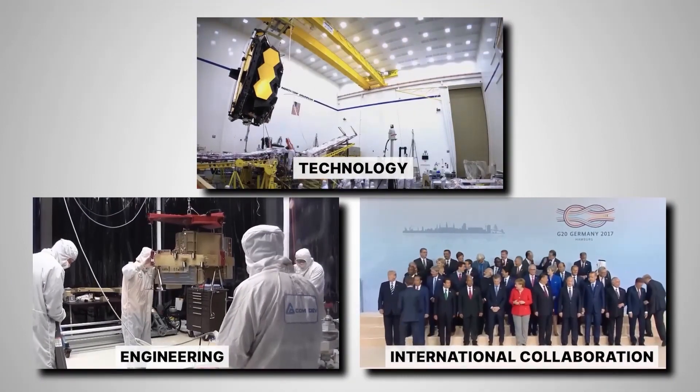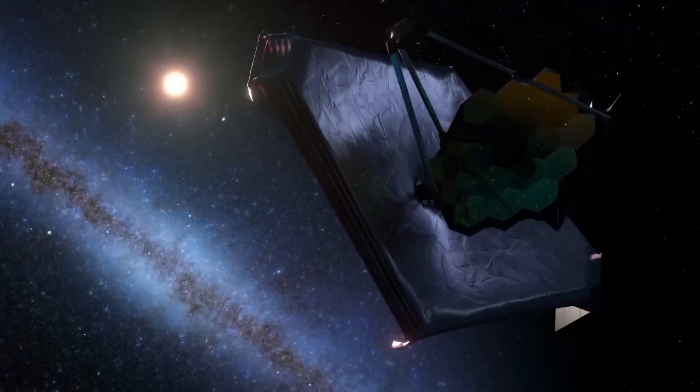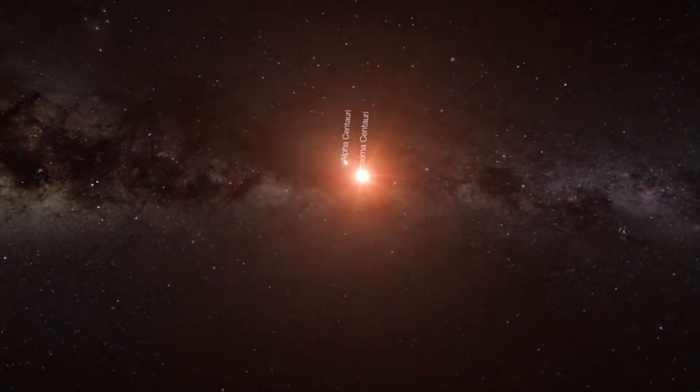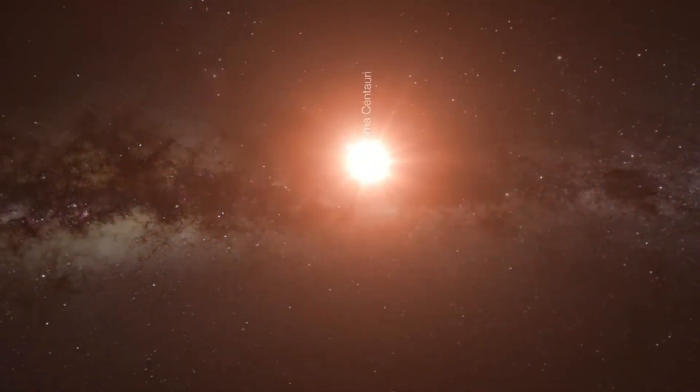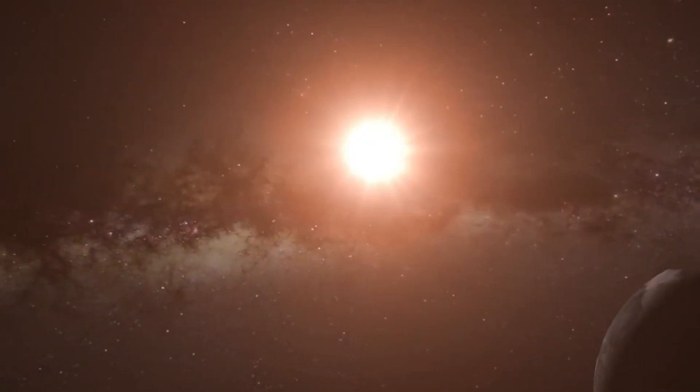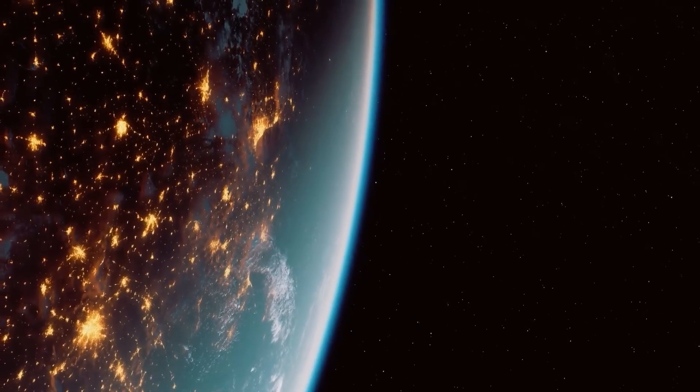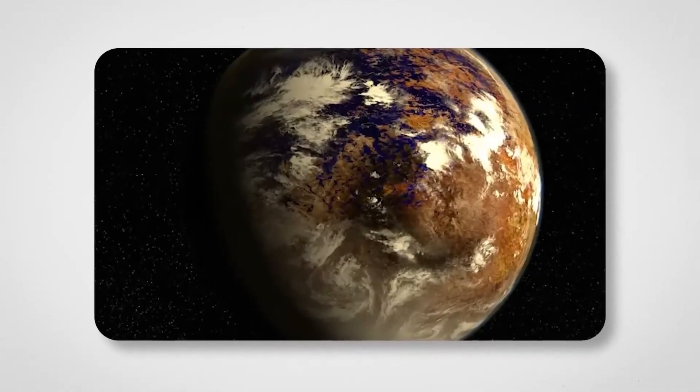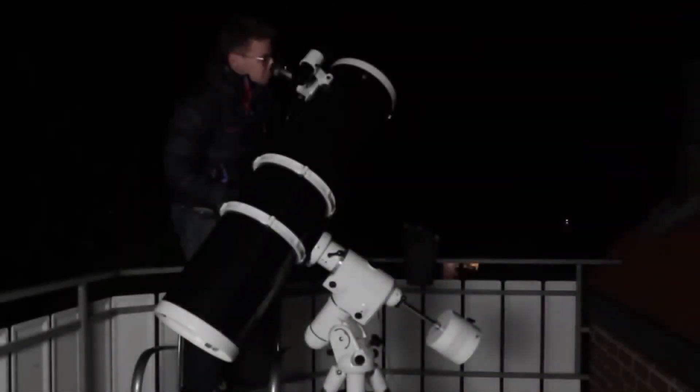The surface conditions of Proxima b remain a mystery. Because the planet orbits so closely to its star, it may be tidally locked, meaning one side of the planet always faces the star while the other side remains in perpetual darkness. This could create extreme temperature differences between the day side and the night side. On the day side, temperatures could be very high, while the night side could be freezing cold. This kind of temperature contrast could make it difficult for life to survive. However, some scientists believe that if Proxima b has an atmosphere, heat could be distributed more evenly across the planet, reducing these extremes.